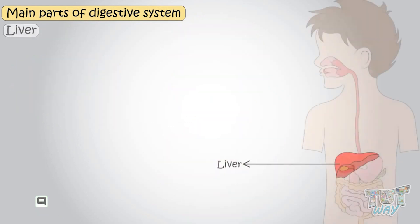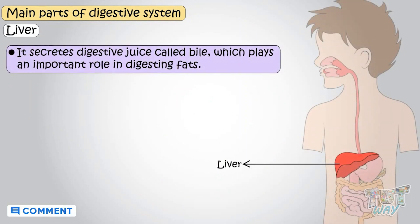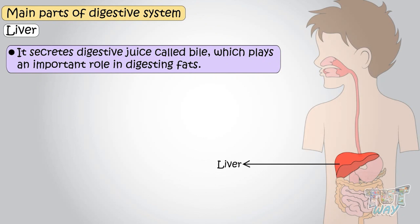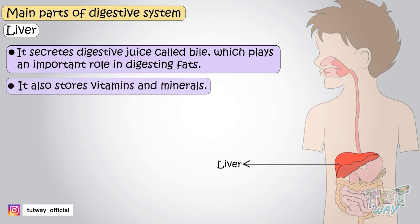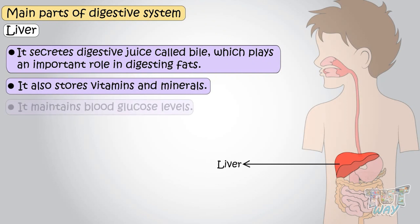Liver — the liver secretes digestive juice which is called bile. Bile plays an important role in digesting fat. The liver also stores vitamins and minerals. It is also helpful in maintaining blood glucose levels and many more functions.